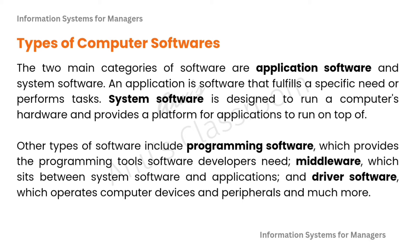The two main categories of software are application softwares and system softwares. Application software fulfills a specific need or performs tasks, while system software is designed to run on computer hardware and provide a platform for applications to run on top of it. Other types include programming softwares, middleware, and driver softwares.